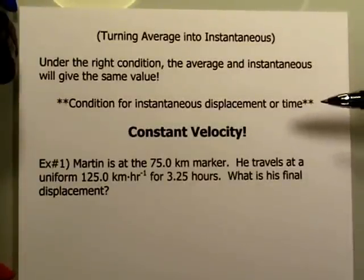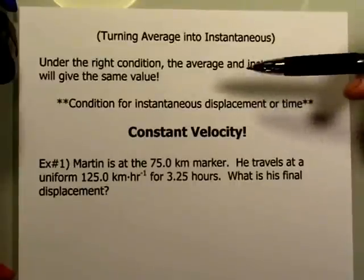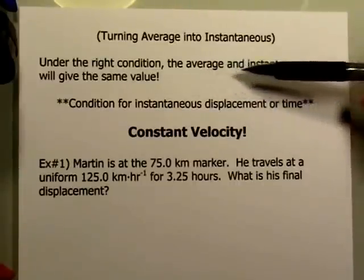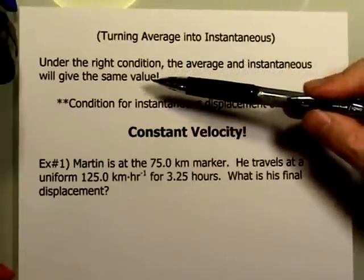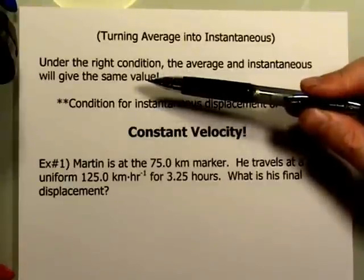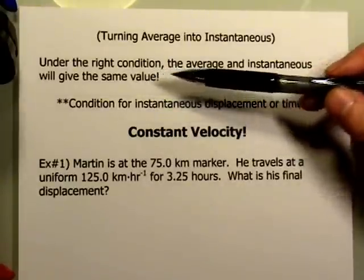So in the last lecture, we asked the question: under what condition do the average and the instantaneous velocity, or speed, give the same value? When are they essentially synonymous?